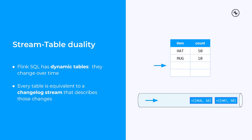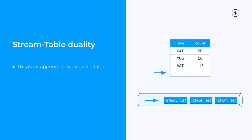What we have with Flink SQL is a kind of stream-table duality. Our tables are actually dynamic tables that change over time, and every table is equivalent to a stream of events describing the changes being made to that table. We call a stream of changes like this a changelog stream. In a case where the only changes happening to the shipments table are new shipments being appended, the corresponding changelog stream is just a stream of insert events. This is an example of an append-only or insert-only table.